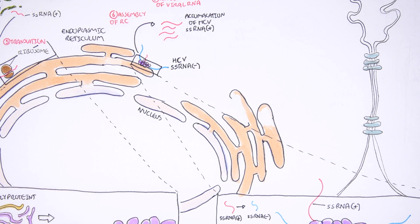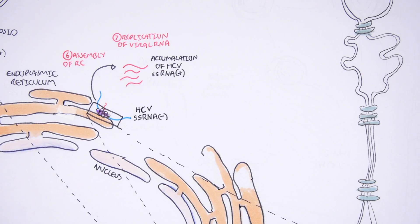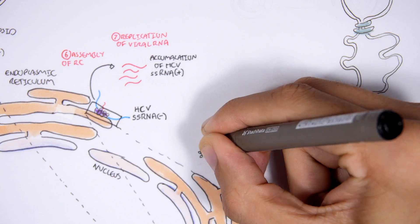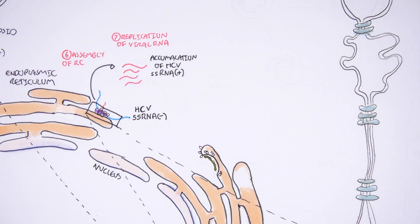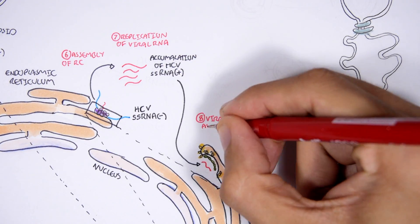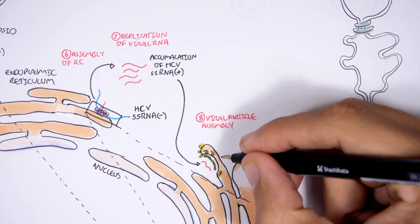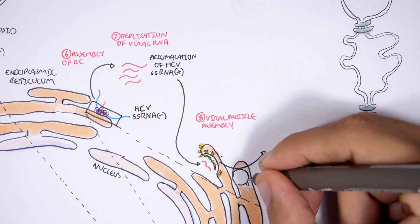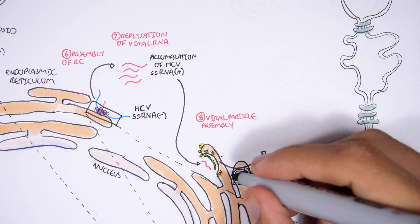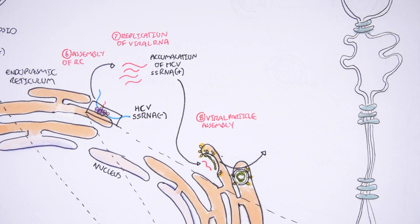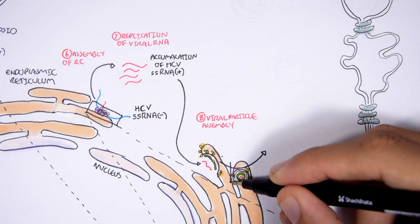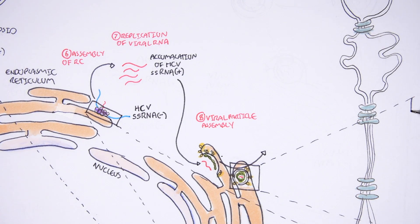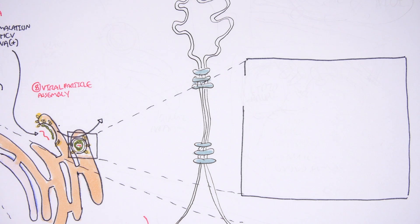After these positive single-stranded RNAs are produced, viral particle assembly will take place. This will occur firstly in the endoplasmic reticulum. The process actually requires the help of a lipid droplet.